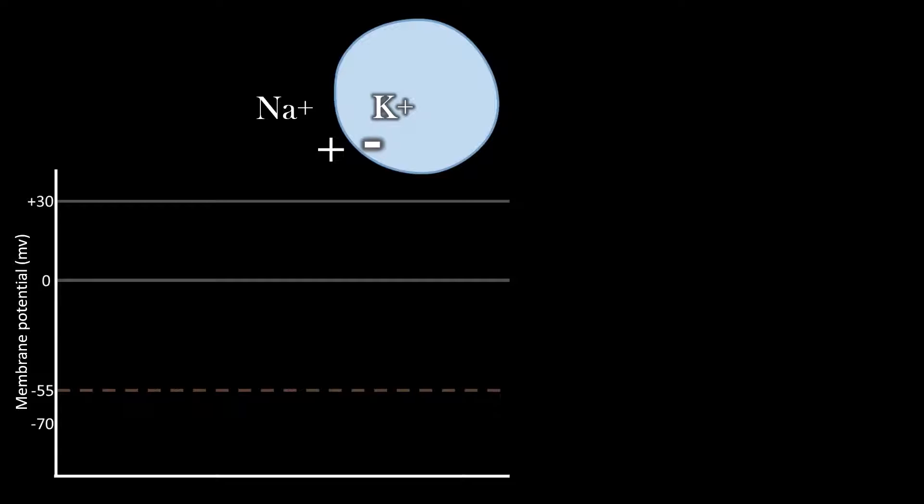So looking at depolarization and repolarization, we're looking at a graph of membrane potential. Membrane potential is the difference in charge between the inside and outside.